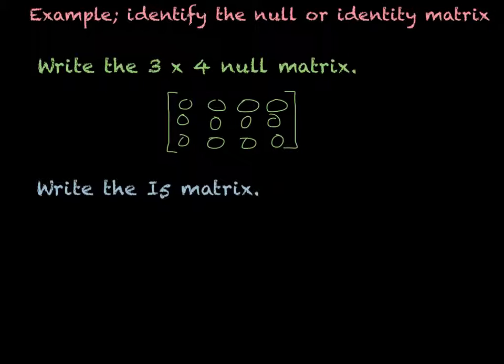And the next one, we want to write the I5 matrix. So I sub 5 is going to be equal to 5 by 5. And it's going to be a 1 in the top corner, and then 0, 0, 0, 0. And there are 5 rows, 5 rows by 5 columns.